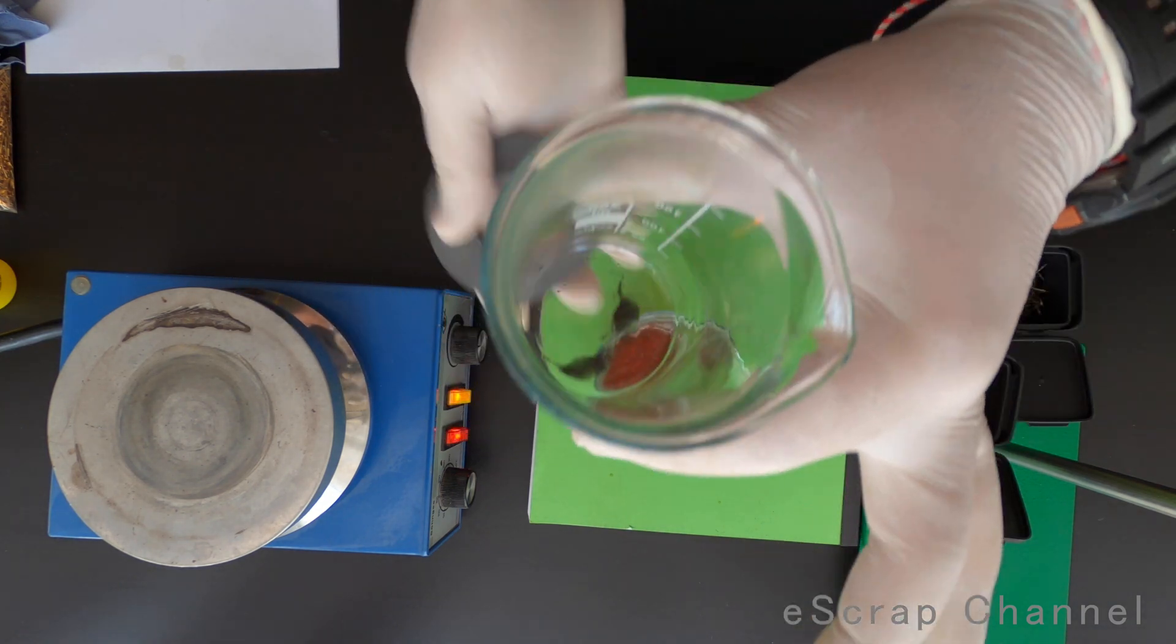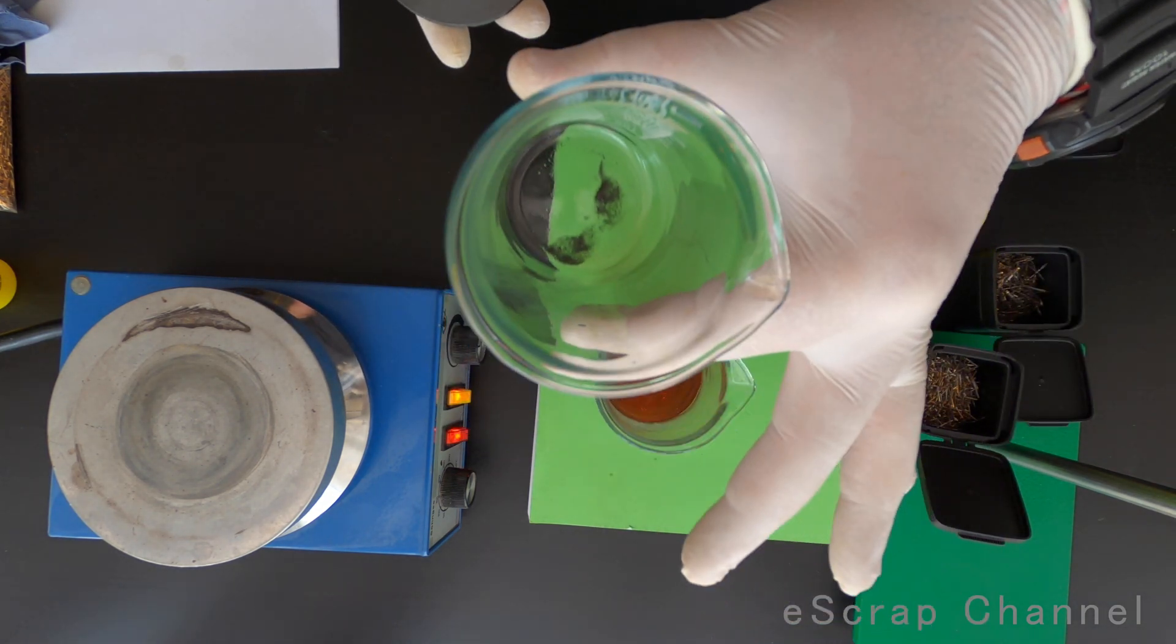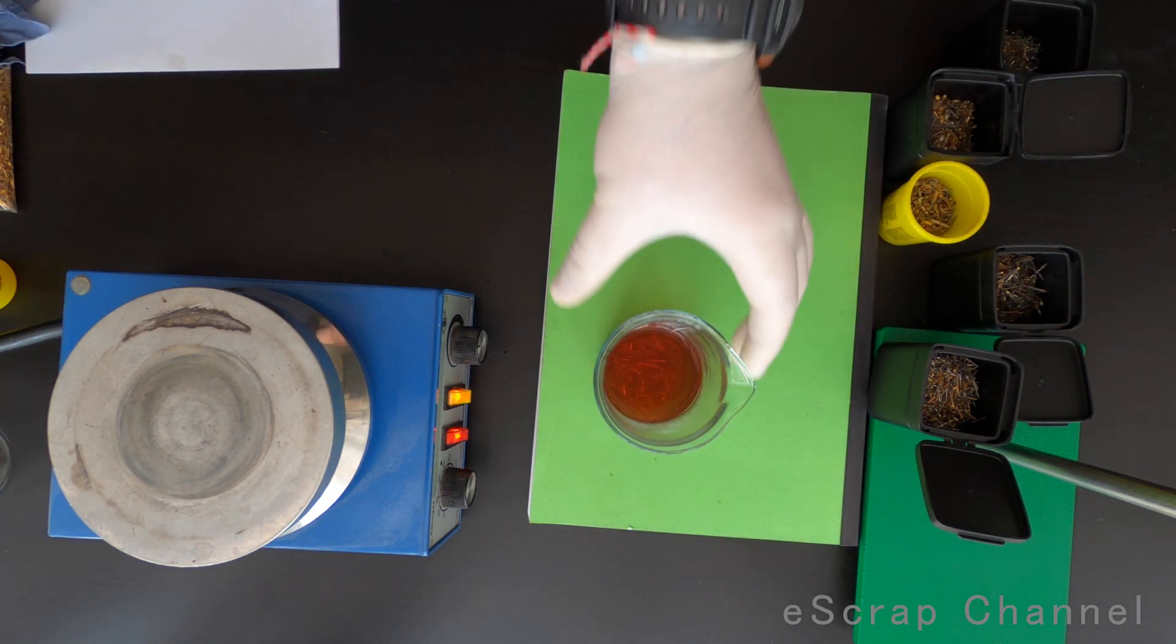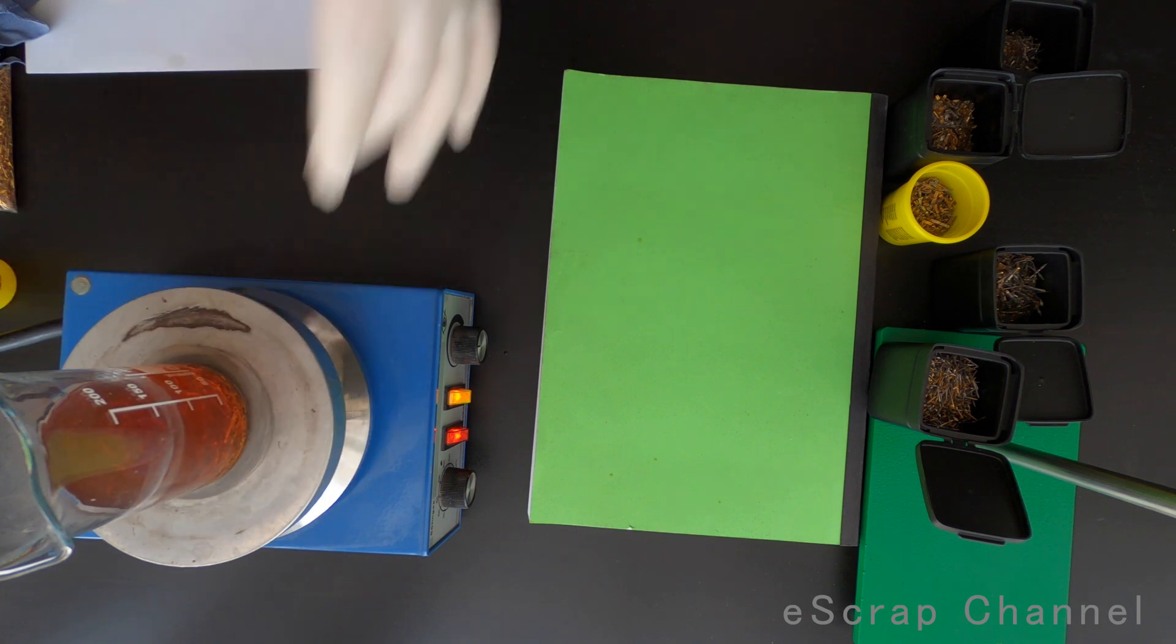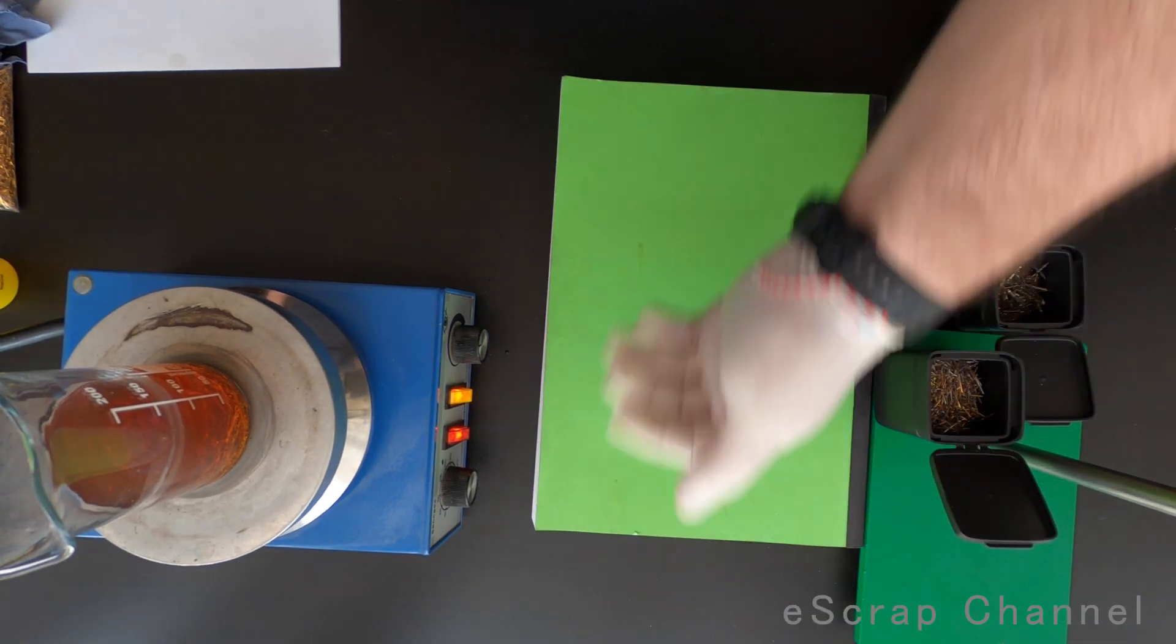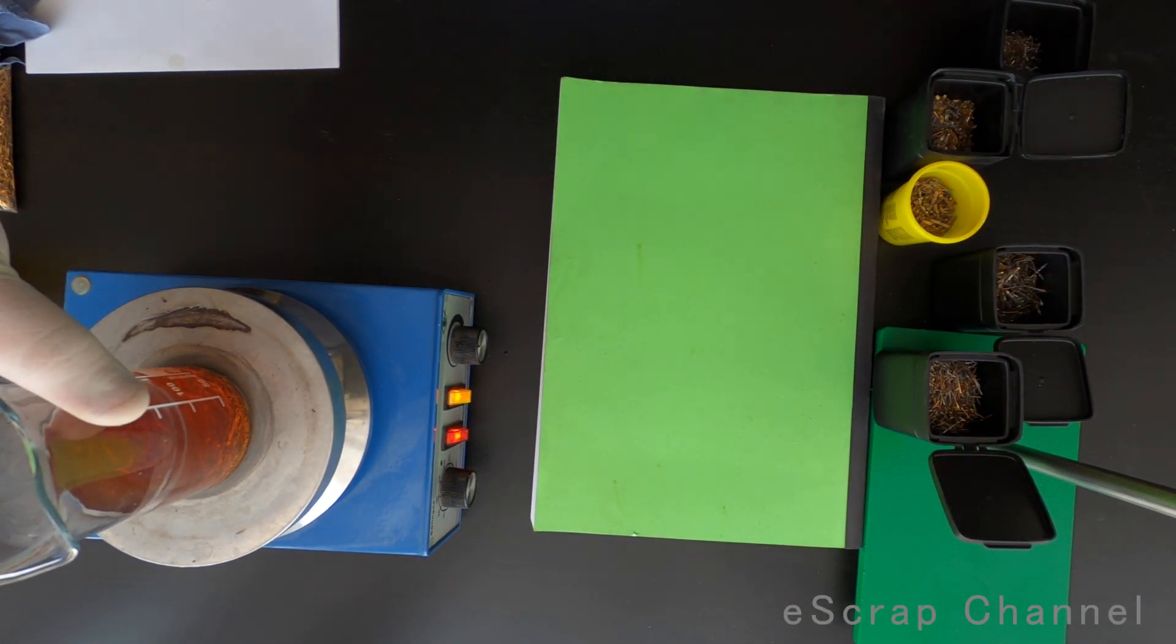Here it is. You can see on the bottom there is still some magnetic material left. Now put it back and continue heating this. Let's see how long it will take to strip the gold.